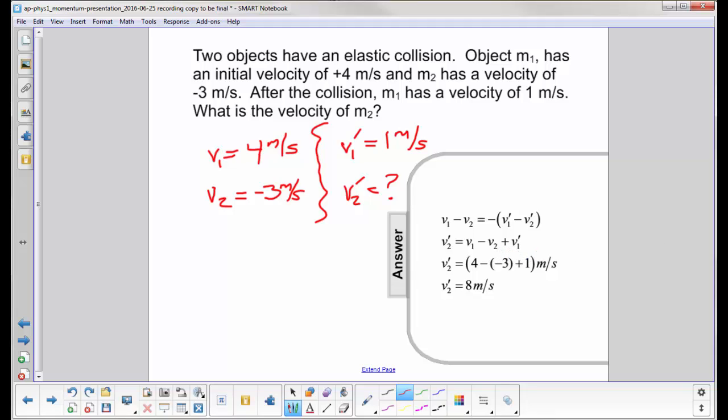And we get the final velocity of the second object is 8 meters per second. Be very careful with the signs. Keep track of where the negatives are.